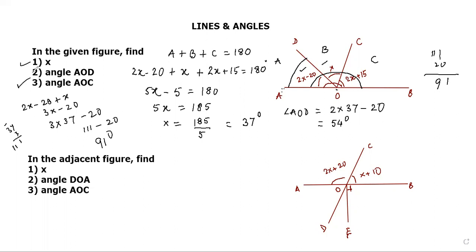So the approach is simple: the total angle on a straight line is 180 degrees — we call it the straight line angle. Form the equation, fill in the values, and solve for the answer. Now let's do the second question: in the adjacent figure, find x.